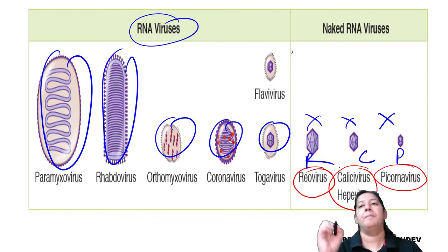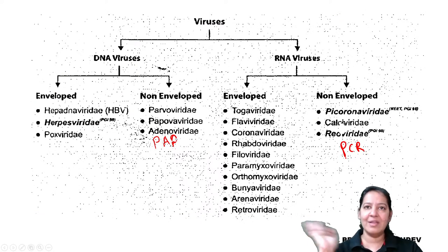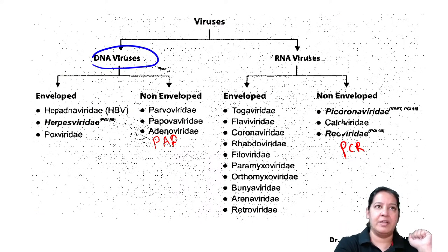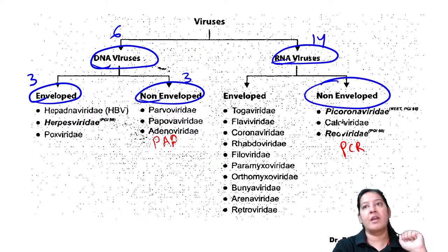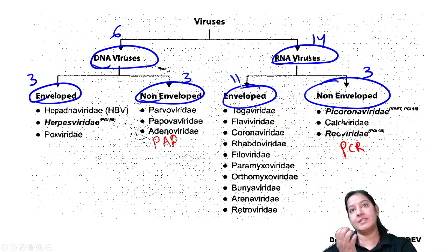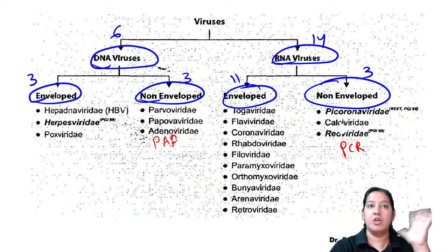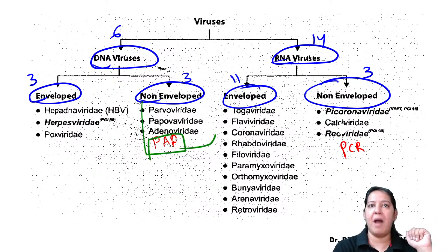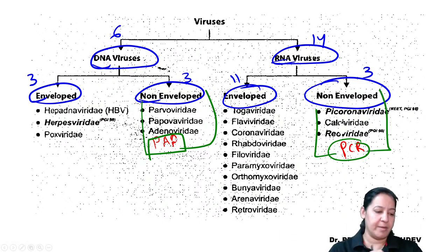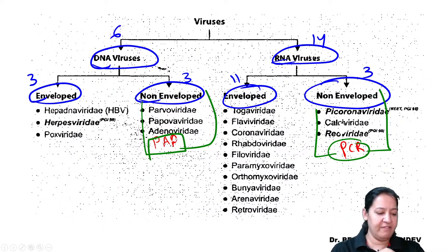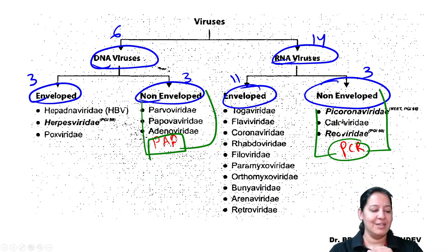PCR are the naked RNA viruses. So the classification by envelope: DNA viruses are 6 - 3 enveloped, 3 non-enveloped with mnemonic PAP. RNA viruses are 14 - 3 non-enveloped with mnemonic PCR, remaining 11 enveloped. The mnemonic for non-enveloped DNA is PAP and for non-enveloped RNA is PCR.